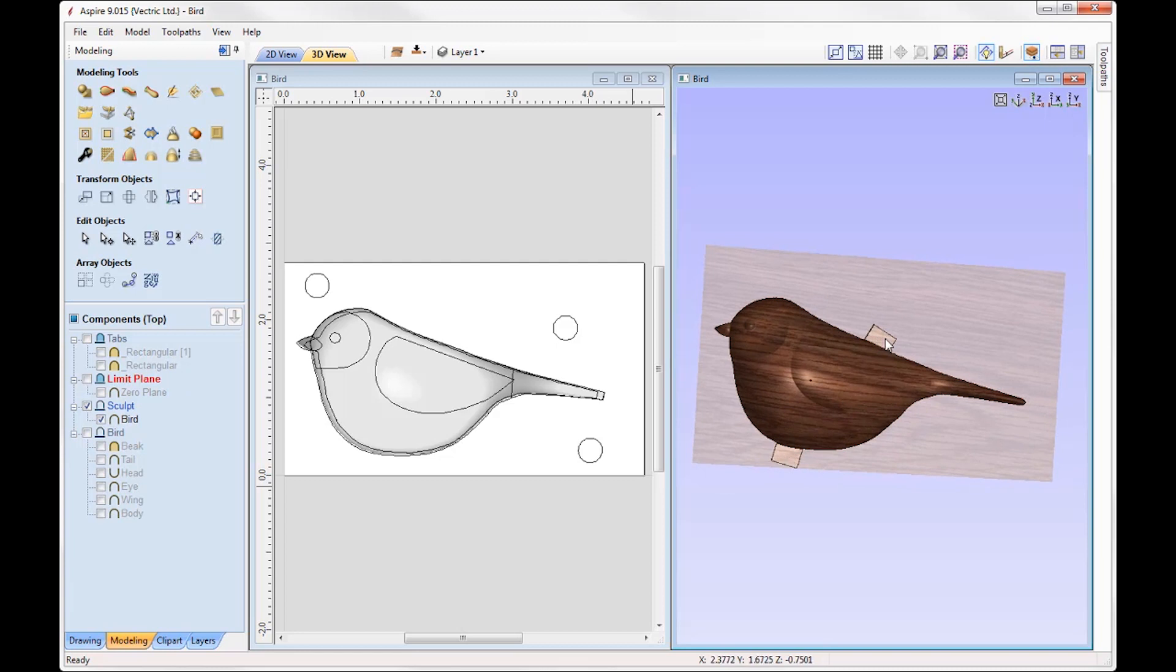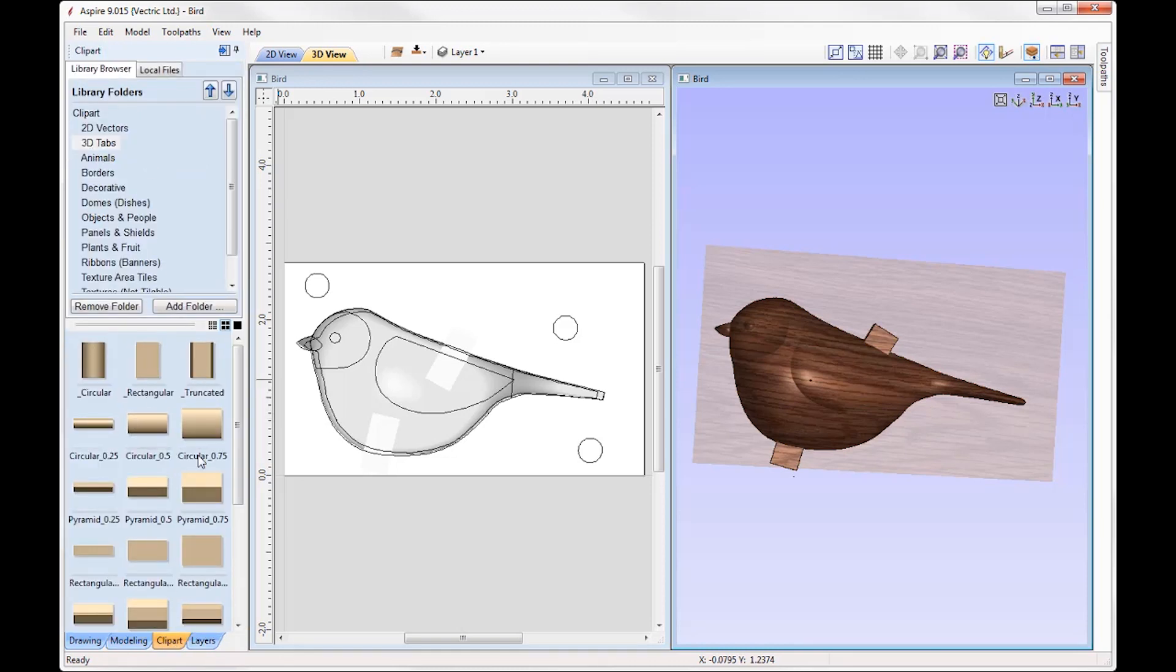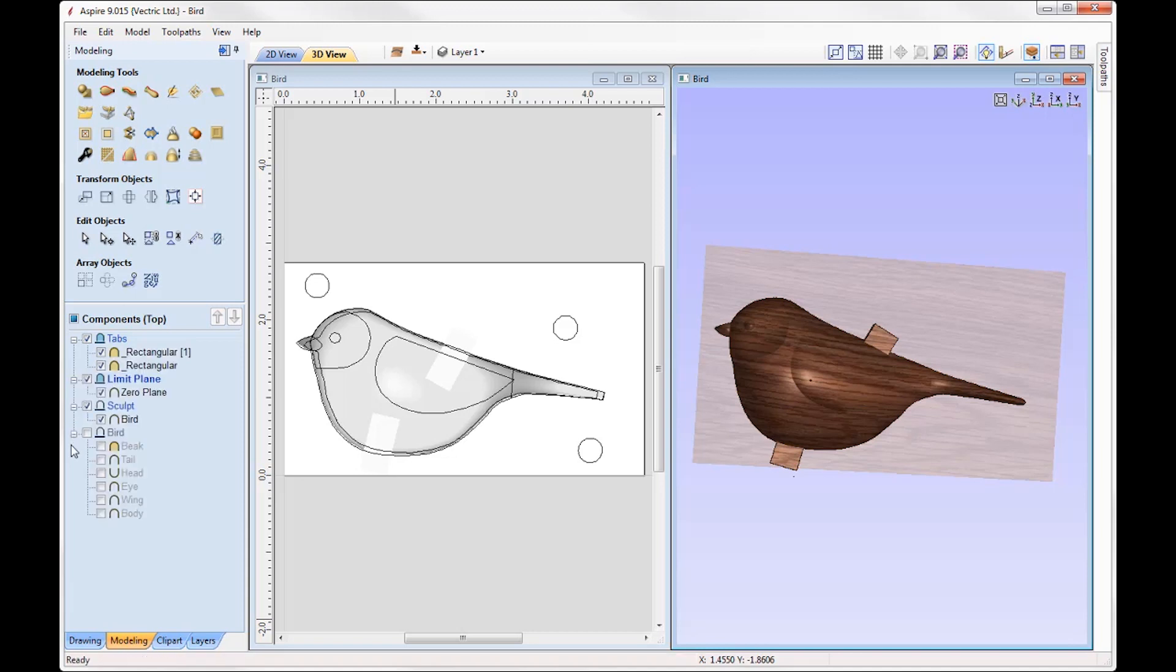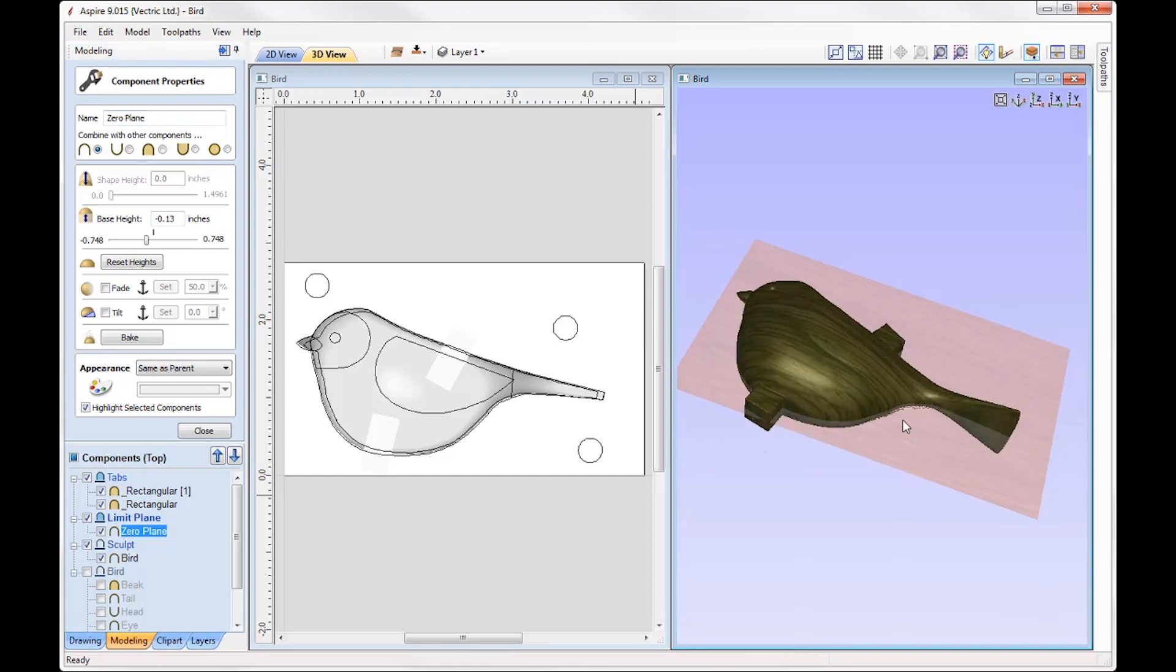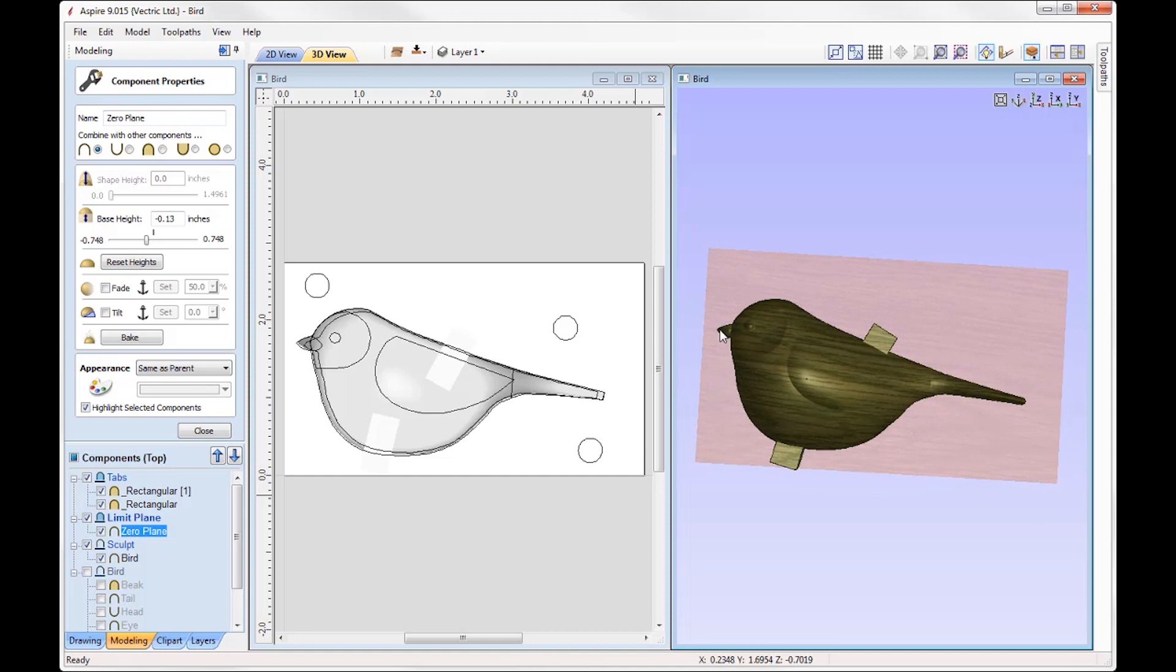You can see we've got some tabs in place which is on this level up here. This is just using the basic 3D tabs from your Clip Art folder. So using the rectangular tabs, Size and Stretching to Size. If we go back into the Modeling tab we have a level here called Limit Plane. Now as we are creating a two-sided part we've input a zero plane using this icon here. If we just select that component going to the Properties you can see that it has a base height of negative 0.13, and this is just to ensure that when we come to cut this out our tool is going to go past zero down by 0.13, and that will basically get rid of any seam or cusping line that would be left around the bird itself.